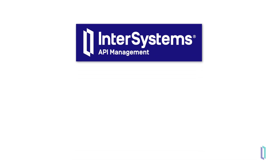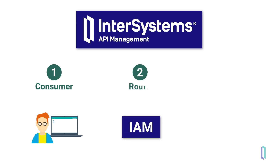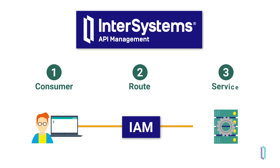When looking at InterSystems API Manager and how it works in your environment, it generally comes down to three basic elements. There is a consumer — typically your downstream user or application — that is requesting access to an API. Then there's the route: IAM parses the incoming request, identifying elements such as the protocol, server, application, and resource being requested, and based on the results, forwards the request to the proper API. Finally, we have the destination, what can be referred to as the service — the upstream system or API, in most examples within InterSystems IRIS, that the request is forwarded to.